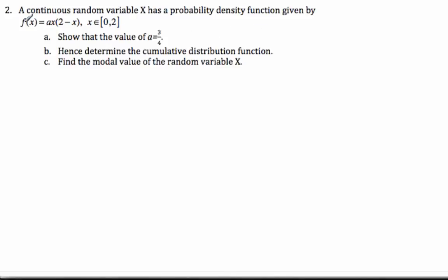Okay, so in this problem here, we have a continuous random variable X that has a probability density function given by this. We want to show that A is 3 quarters, find the cumulative distribution function, and then find the modal value of the random variable X.